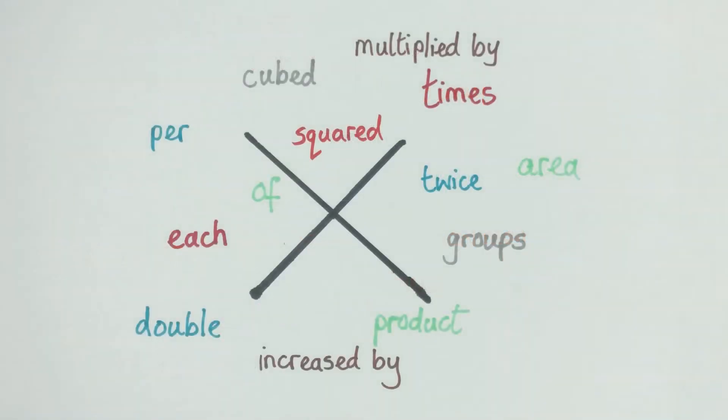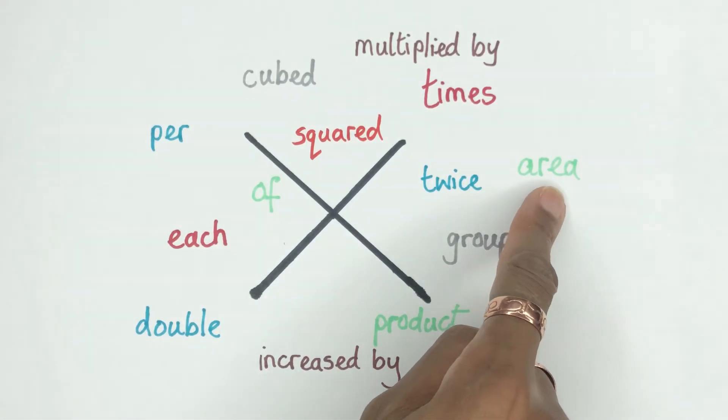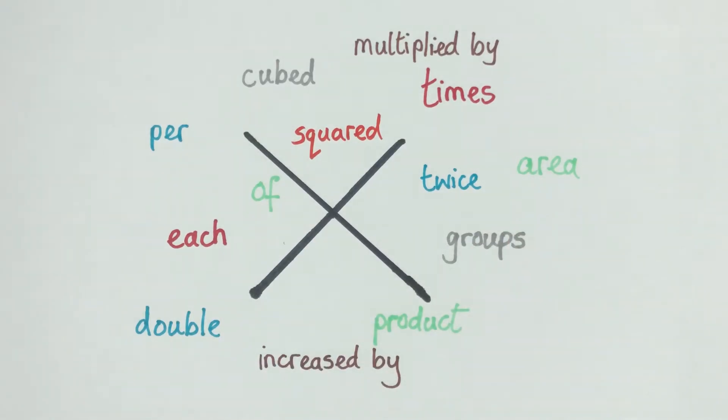Now here's the multiplication words. Some of them might be familiar to you. Increased by, multiply, product is a very common one that's used in multiplication word problems to differentiate from the word quotient which means to divide. Area, so remember area is multiplying because it's length times width if you're doing geometry.